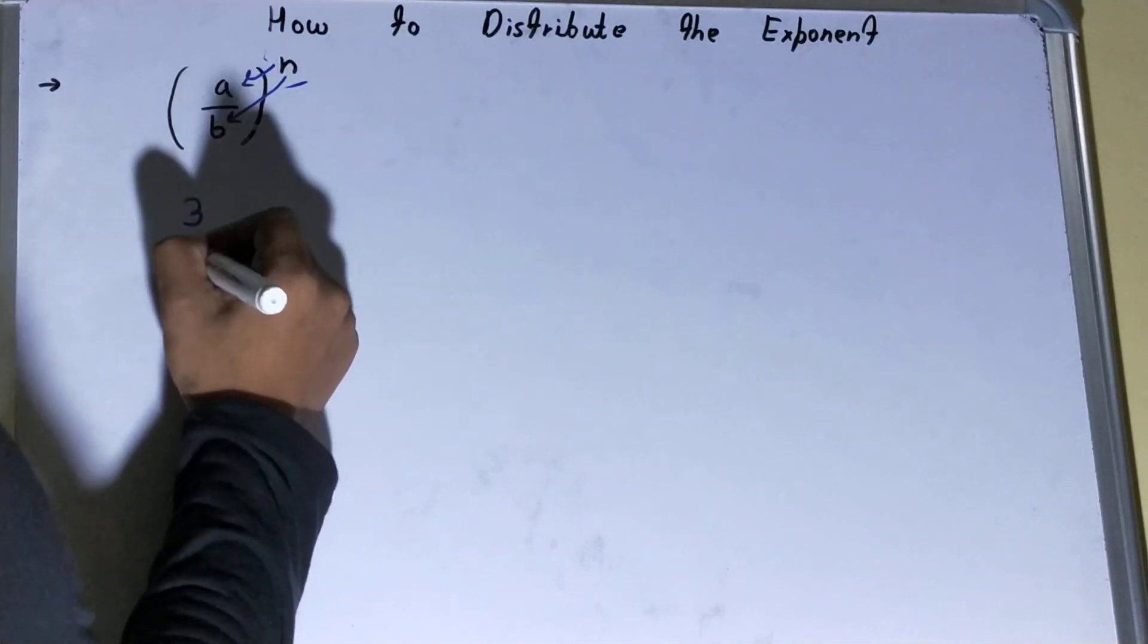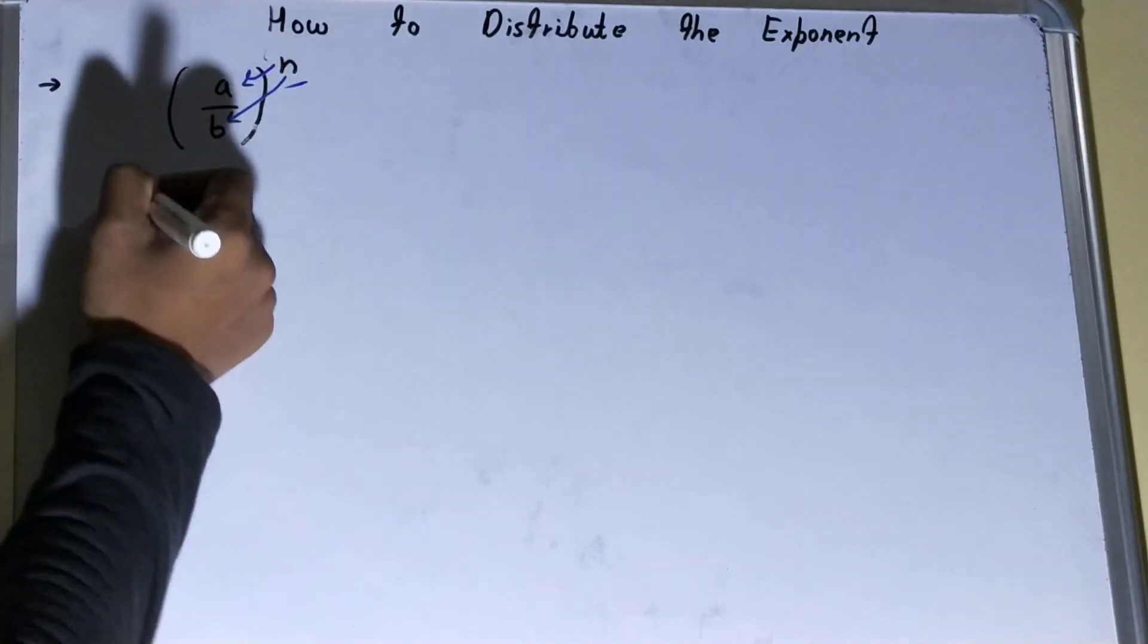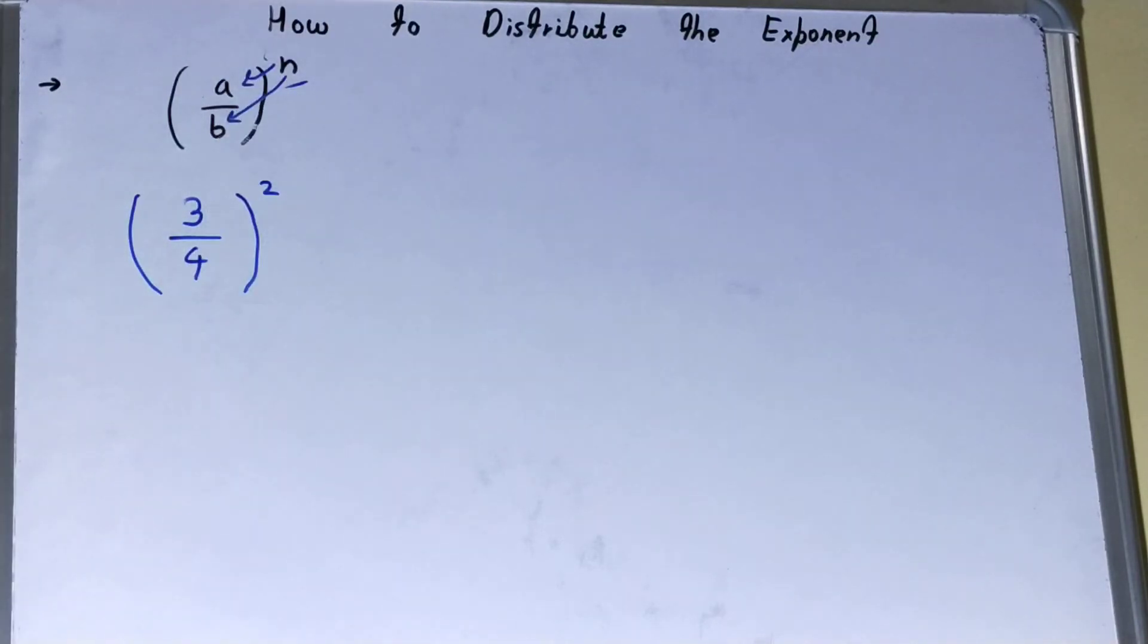Let's take an example. For example, you have got three by four, but the problem is this exists within a bracket with the exponent.